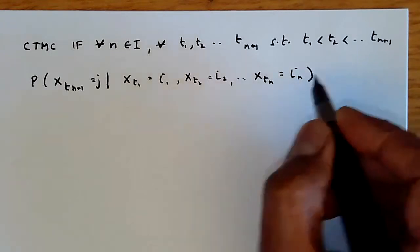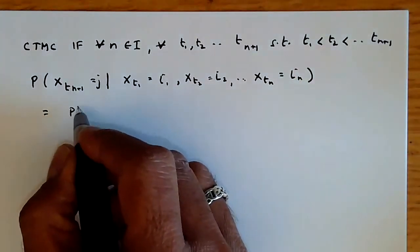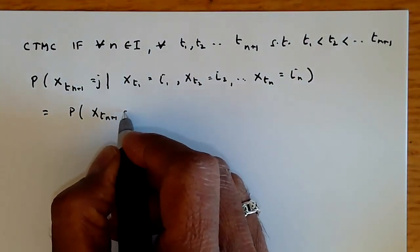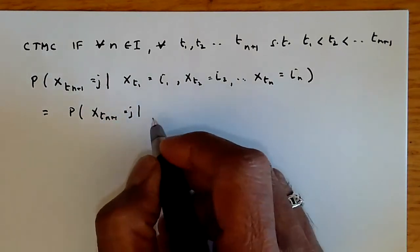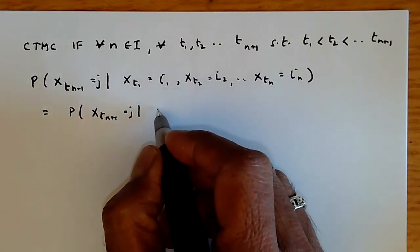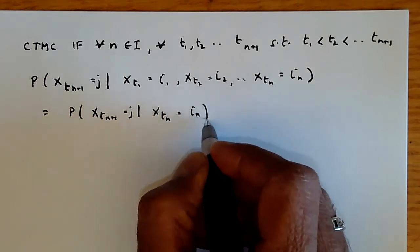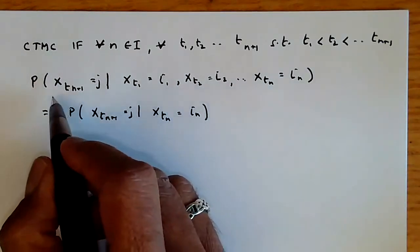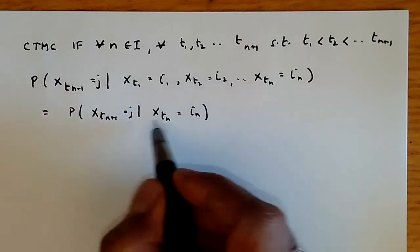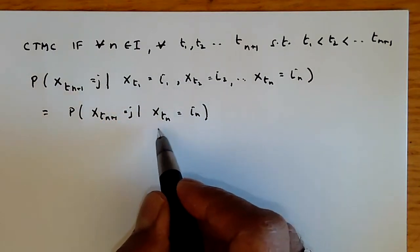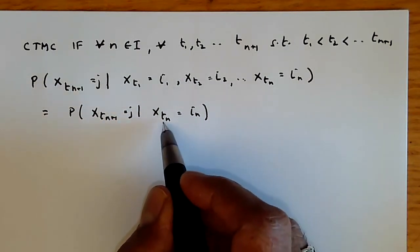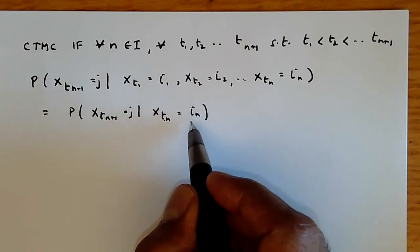is equal to the probability of X_{T_{n+1}} equals j, conditional only on the last time step, which is X_{Tn} equals i_n. So, the future, which is X_{T_{n+1}}, depends on the past only through what is interpreted as being the current state, X_{Tn} being the current state i_n.